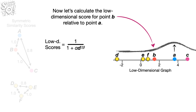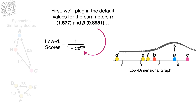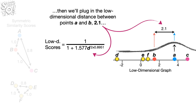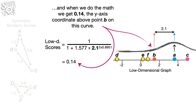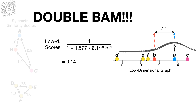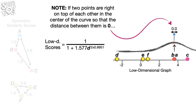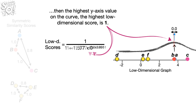Now let's calculate the low-dimensional score for point B relative to point A. First, we'll plug in the default values for the parameters alpha and beta. Then we'll plug in the low-dimensional distance between points A and B, 2.1. And when we do the math, we get 0.14, the y-axis coordinate above point B on this curve. Note, if two points are right on top of each other so that the distance between them is 0, then the highest y-axis value on the curve — the highest low-dimensional score — is 1.